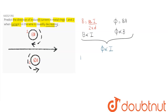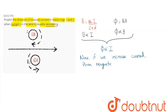Now, if we increase the current, then the flux increases. Therefore, magnetic flux increases in both the rings.